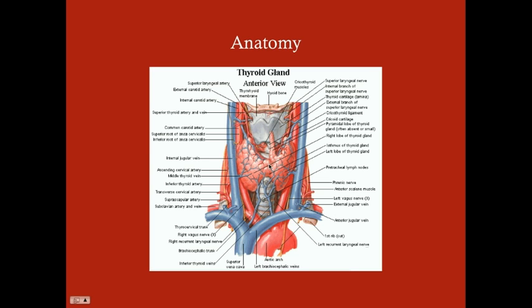There is also a pyramidal lobe, which isn't always present—some people don't have one, some have a small one, and some have a really large one. A pyramidal lobe will usually come off the isthmus. As far as arterial circulation, you've got circulation to both the superior and inferior poles. You're not symmetrical on your right and left side. The artery to the superior thyroid comes off the external carotid artery on both sides, and then you have an inferior thyroid artery, which comes off the subclavian artery or a thyrocervical trunk.